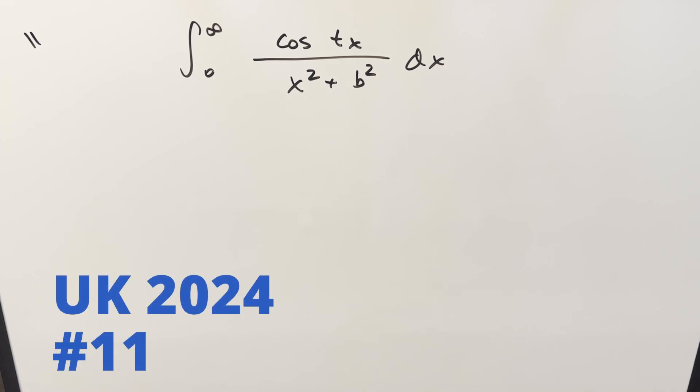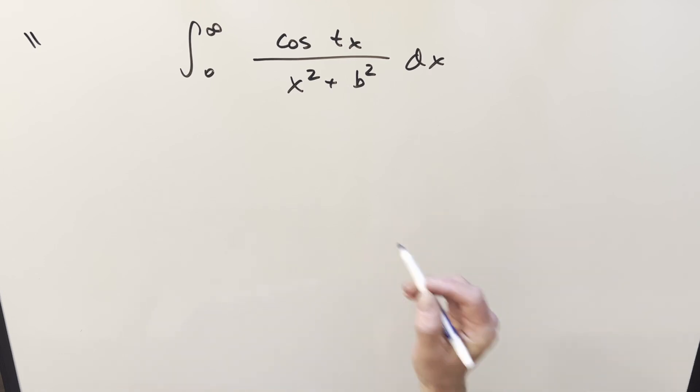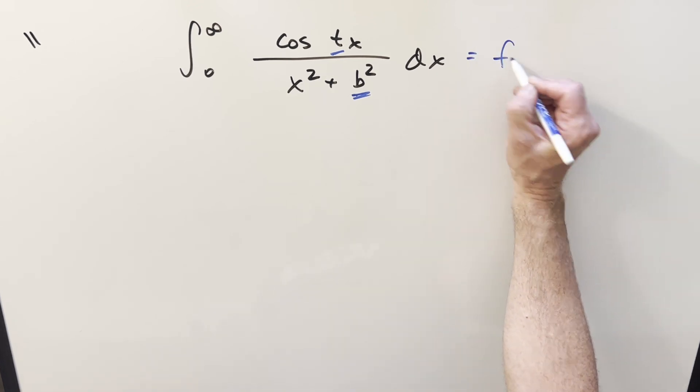Okay, we have a good one here today from the UK integration B 2024 number 11. We have the integral from 0 to infinity, cosine tx over x squared plus b squared dx. As you can see, they've already set it up and kind of parameterized it for us. They clearly want us to use Feynman's trick, so what I'm going to do is I'll write the whole thing as f of t.